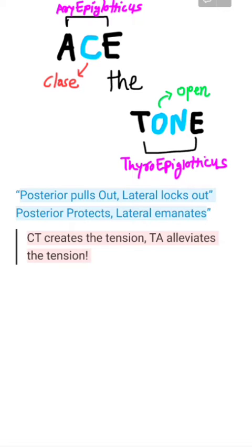Another rhyme: 'Posterior protects and lateral emanates.' This represents that posterior cricoarytenoid is the safety muscle of the larynx, and lateral cricoarytenoid is the whispering muscle of the larynx.